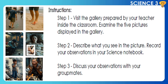Instructions: Step 1 — Visit the gallery prepared by your teacher inside the classroom. Examine the six pictures displayed in the gallery. Step 2 — Describe what you see in the picture. Record your observations in your science notebook. Step 3 — Discuss your observations with your group mates. Answer the following questions as a group.